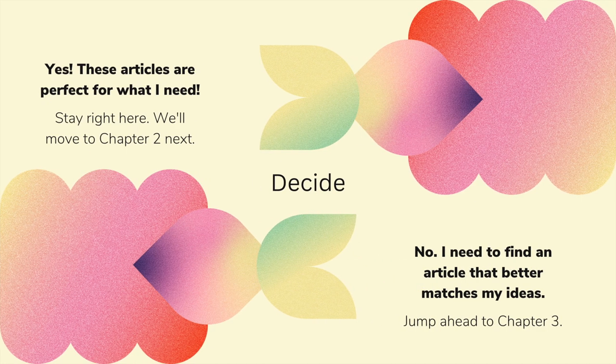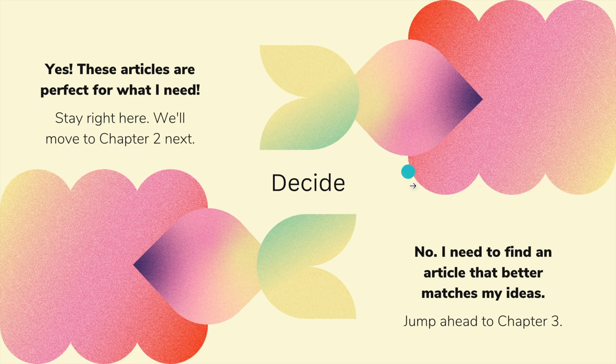Then you get to a point where you need to make a decision. Your teacher is giving you the option of using the articles that she or he has provided. You can think these articles are exactly what I want while I'm working on this paper — I might want to use this one to help prove this argument that I'm thinking about. Or you might think you need to find an article that better matches your ideas. If the articles are exactly what you need, stay right here. If you need to do a little more research, jump ahead to chapter 3.